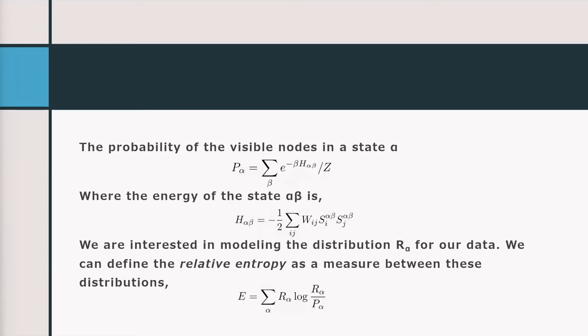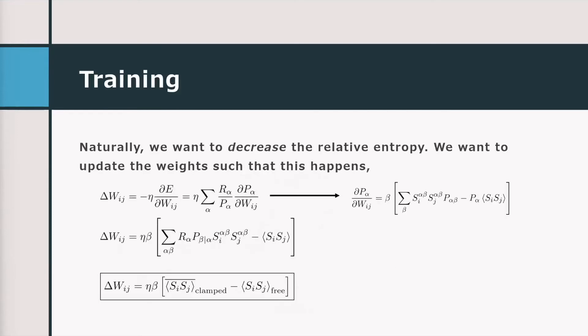The important thing is we want to match some probability distribution for our data, and the way we do that is using something called the relative entropy — the KL divergence. From information theoretic reasons, this is the right quantity to minimize. Here R_alpha is the desired probability distribution and P_alpha is what the model currently produces. Your goal is to minimize this relative entropy, which intuitively means matching your model distribution to the data distribution. You do this by updating the weights, computing the gradient of the relative entropy — just like backpropagation in regular neural networks.